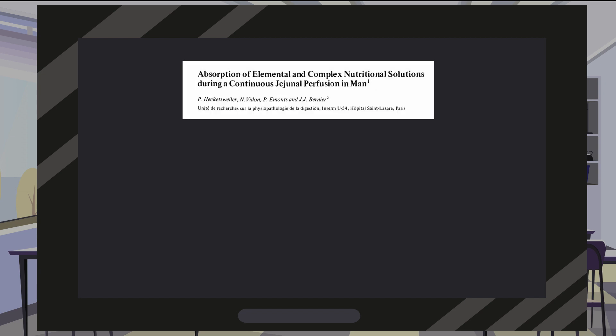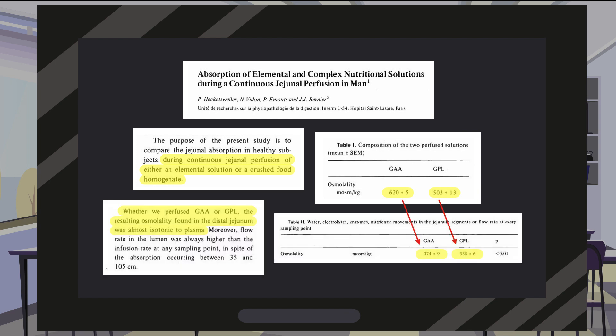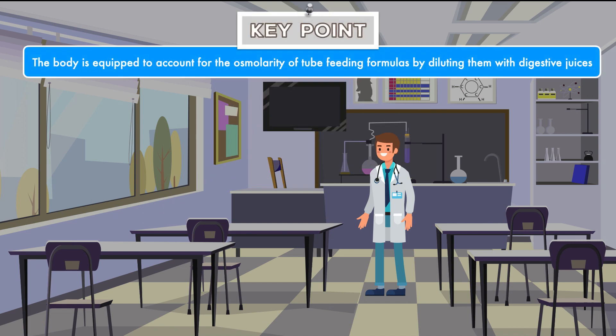Another study, by Hecatsweiler et al., tested the osmolarity of chyme when formula is infused directly into the jejunum. They provided two different formulas with an osmolarity of about 620 and 500 milliosmols per liter respectively, at a rate of 120 milliliters per hour over three hours. By the time each one reached the distal jejunum, the osmolarity nearly matched that of the blood. Together, these studies show that the body is equipped to account for the osmolarity of tube-feeding formulas by diluting them with digestive juices, and that limit doesn't appear to be exceeded by formula alone.